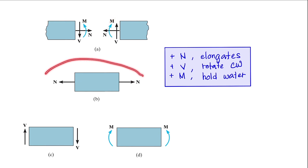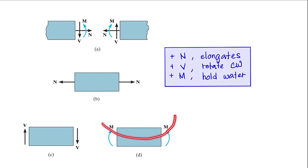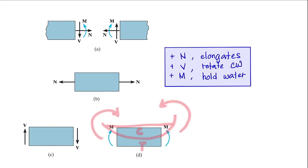What happens here is that your normal force causes elongation or tension. Your shear force causes a rotation in a clockwise direction. And your moments cause compression on top and tension on the bottom. To help memorize this: positive normal force elongates; positive shear force rotates clockwise; and positive moment holds water — meaning the beam bends in a shape that could hold water, with compression on top and tension on the bottom.